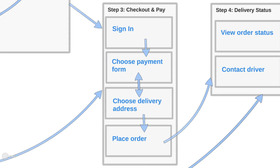The third step is where they check out and pay. If the user hasn't already signed in, they'll do so here. If they've already saved their payment and delivery information, they can easily skip through those steps or they can enter it in. Then they place their order. If you've used this application before, step three will be really fast — all you have to do is click place your order.